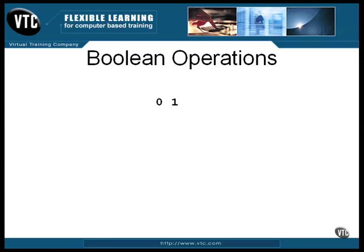A bit can be only one of two values, either 1 or 0. A computer program is full of yes or no questions, and by tradition we have assumed that 0 is false and 1 is true. This is universally accepted: 0 always means false and 1 always means true. The simplest of the Boolean operators is the unary NOT operation — it will reverse 1 to 0 or 0 to 1.